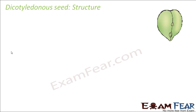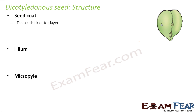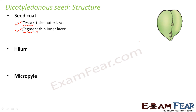Let us roughly look at the structure of a dicot seed. A seed contains a seed coat, hylum, and micropyle — these are the three important parts. The seed coat is the outermost covering and has two layers: a very thick outer layer called testa, and an inner thin layer called tegmen. Testa and tegmen together form the seed coat.